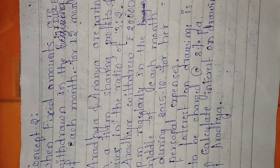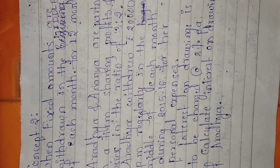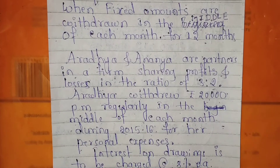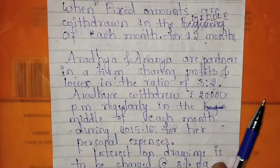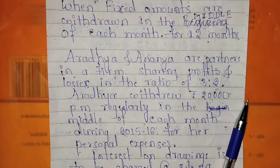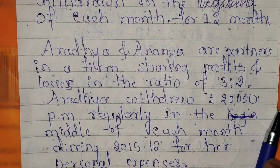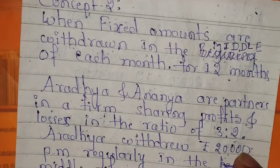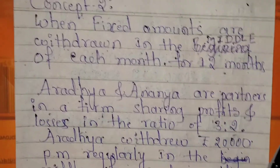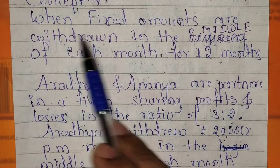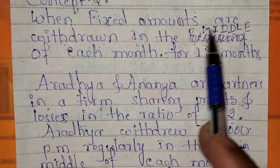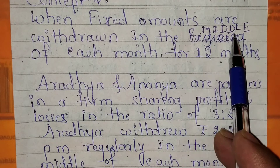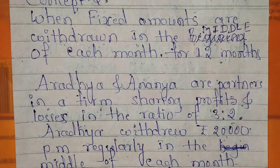First, note down this question — pause the video and note it down, then follow me. Today's question is concept number two. The concept number two is: when fixed amounts are withdrawn in the middle of each month for 12 months. Yesterday's question was at the beginning of each month, but today's question is in the middle of each month.